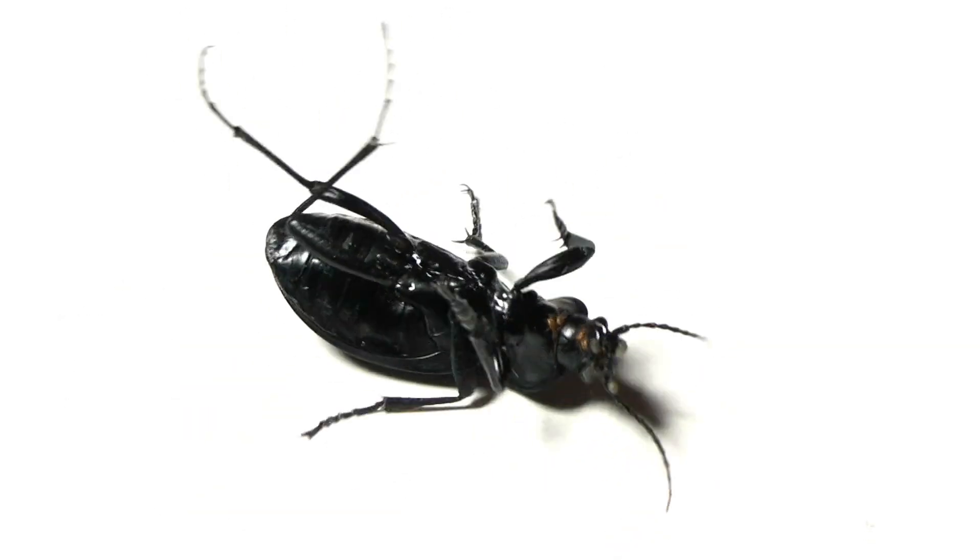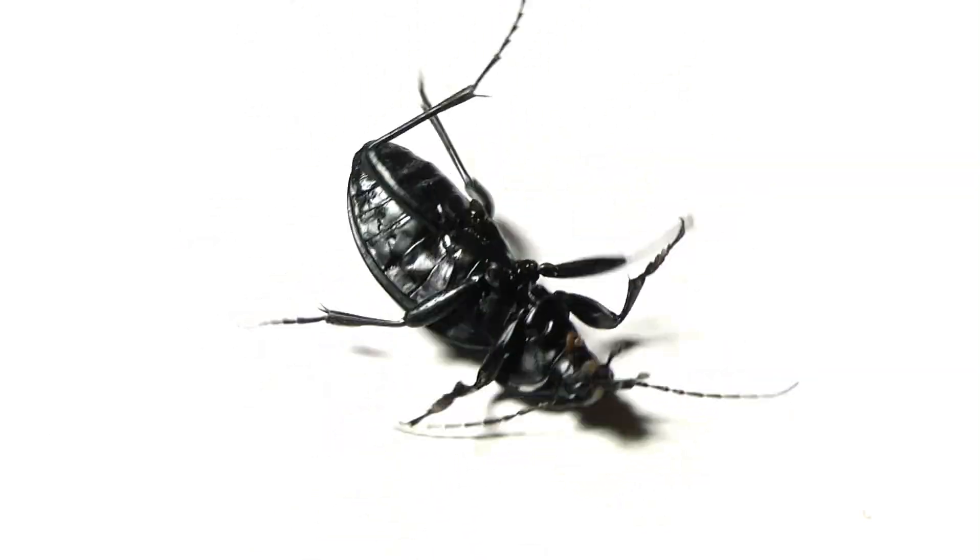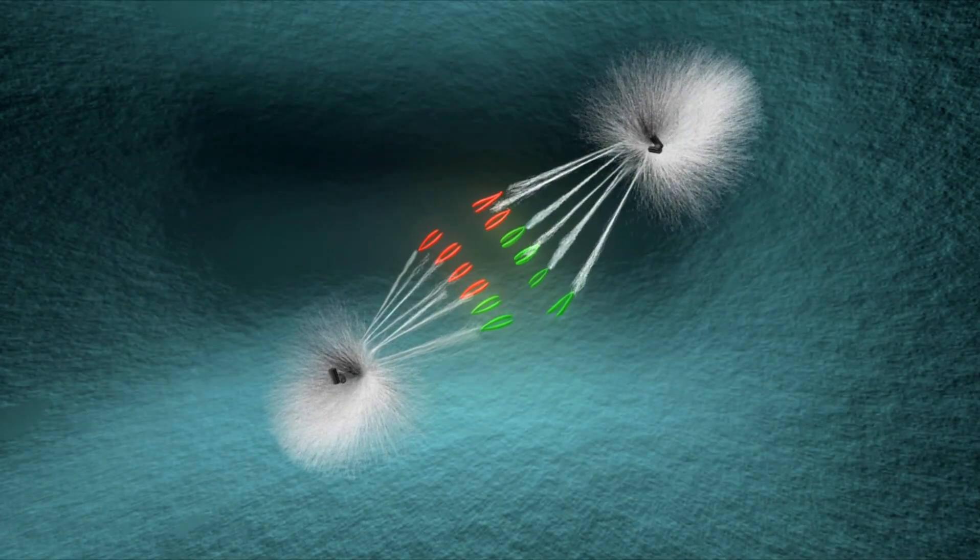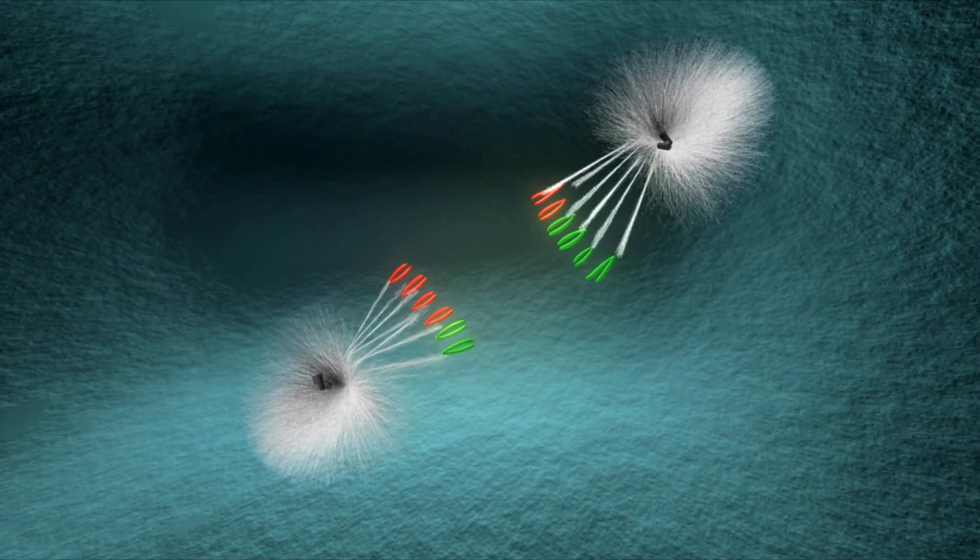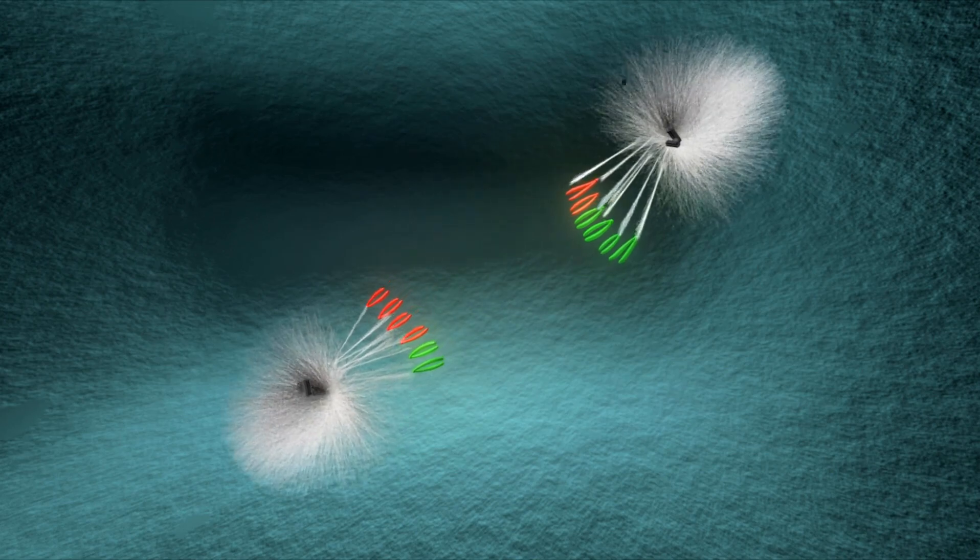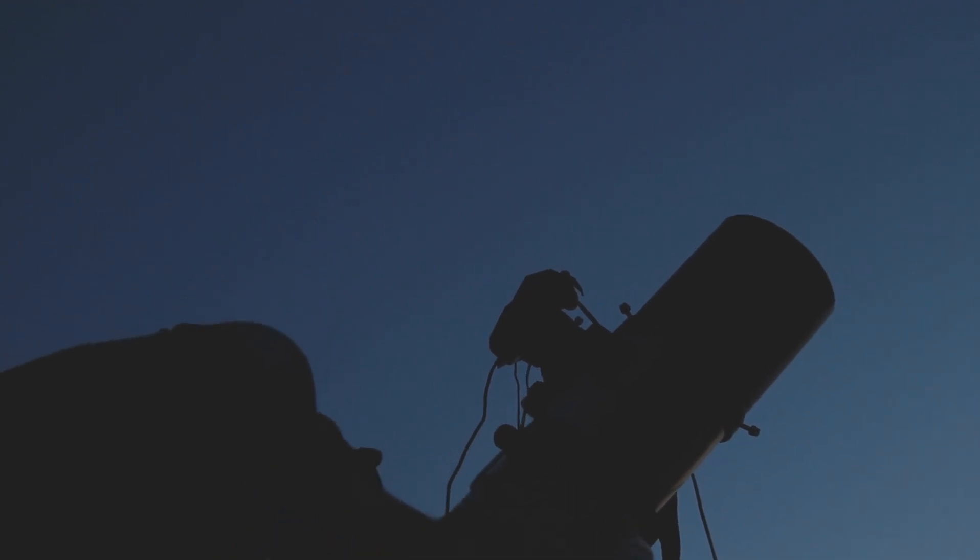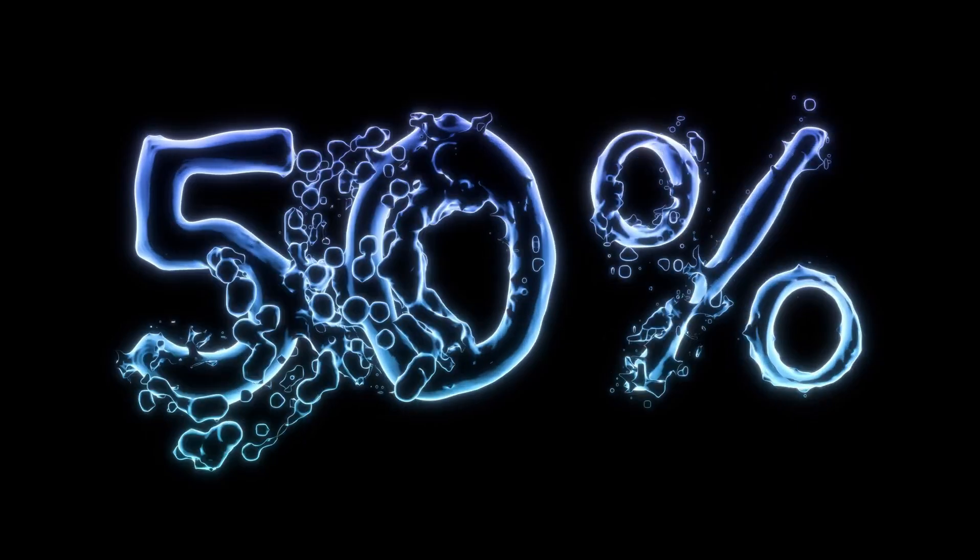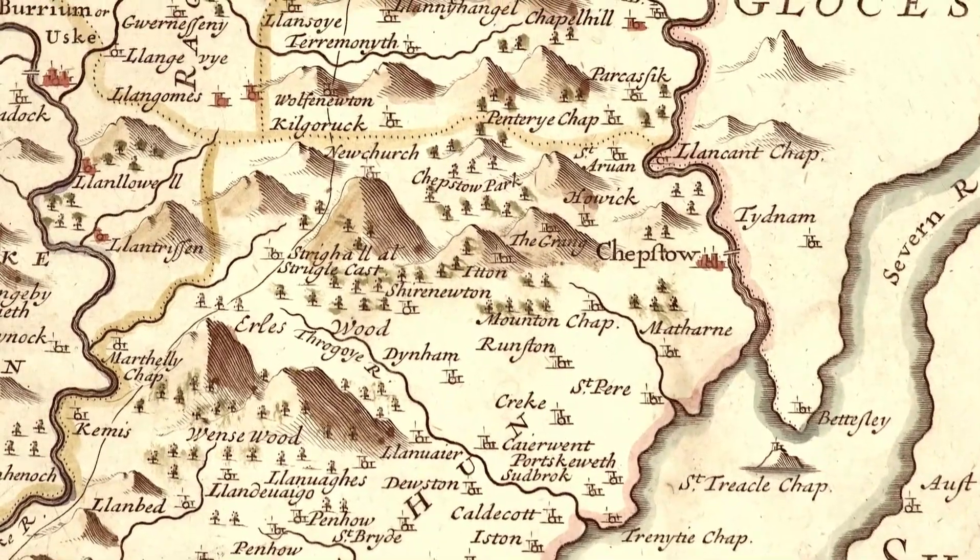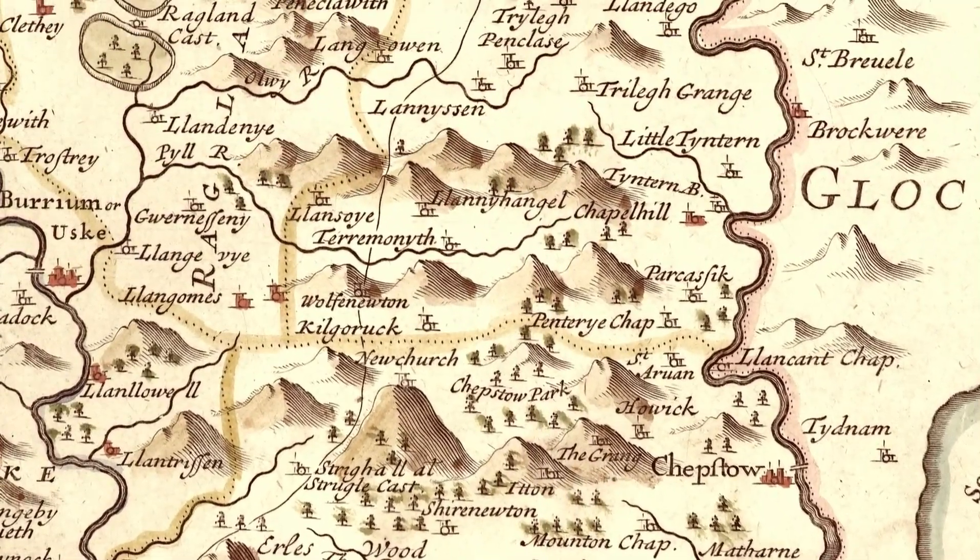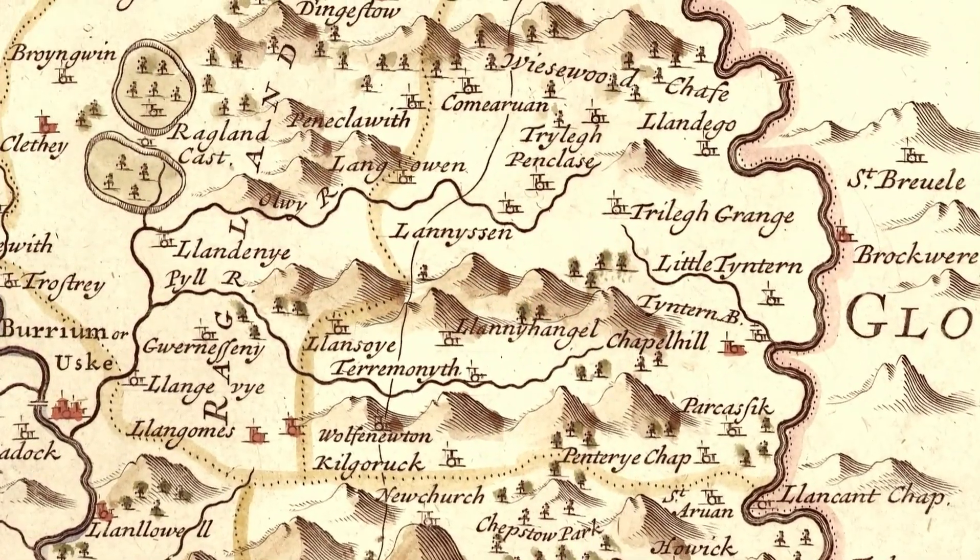But what makes Betelgeuse truly enigmatic is not just its changing brightness but its irregularity. Unlike many stars that follow a predictable pattern, Betelgeuse occasionally deviates from its rhythmic dimming and brightening, hinting at complex and less understood processes occurring within its colossal form. In a recent groundbreaking revelation, Betelgeuse captured the attention of astronomers and stargazers worldwide with an unexpected and dramatic change in its appearance, an event now famously known as the Great Dimming.